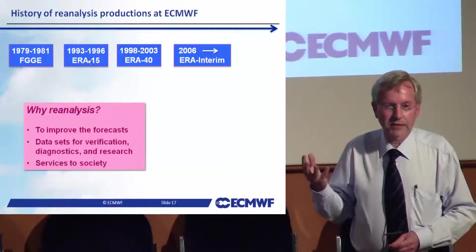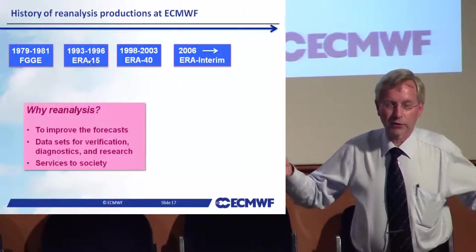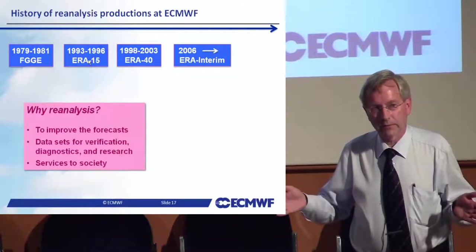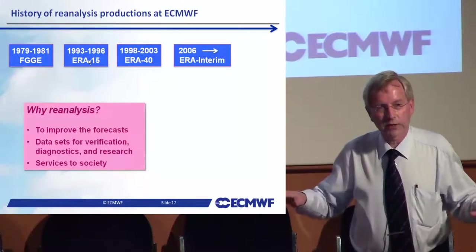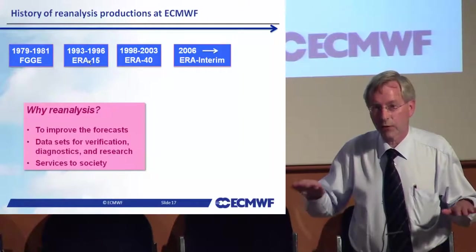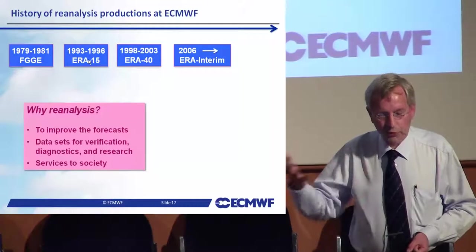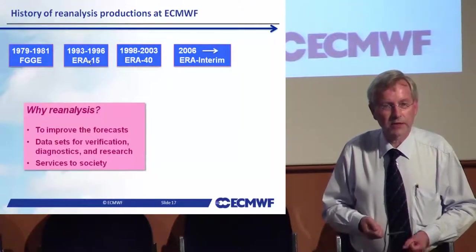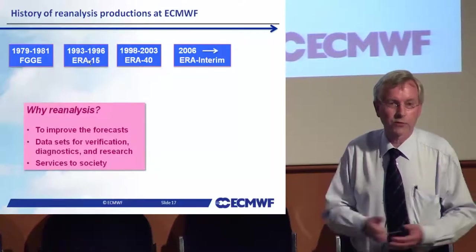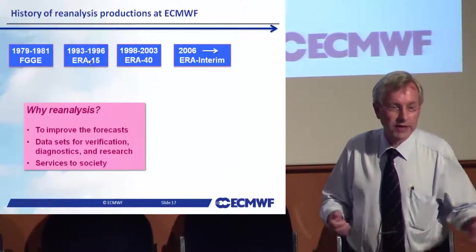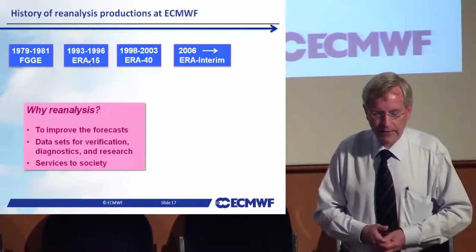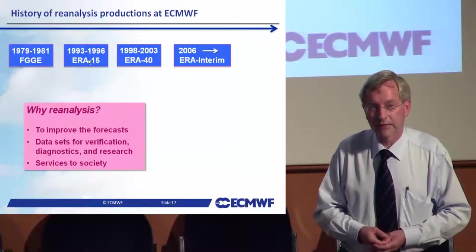The most recent version is called ERA-Interim, spanning 1979 to present, using a version of the forecast system that is more than five years old. This atmospheric reanalysis is important both as a description of how the atmosphere evolves and to improve our forecasts — providing a stable baseline to assess forecast improvements. It also provides a service to society: reanalyses are extensively used in research and for commercial applications like wind energy, where they are used to site new wind farms by estimating wind climatology over a longer time span.